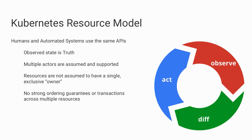The important part here is that humans and automation are multiple actors. It's a world of essentially chaos — the observed state is the truth; there is no other truth but that. The multiple actors are assumed and supported cheerfully. Lots of actors, lots of things working against the desired state. The desired state is really the only thing that matters.